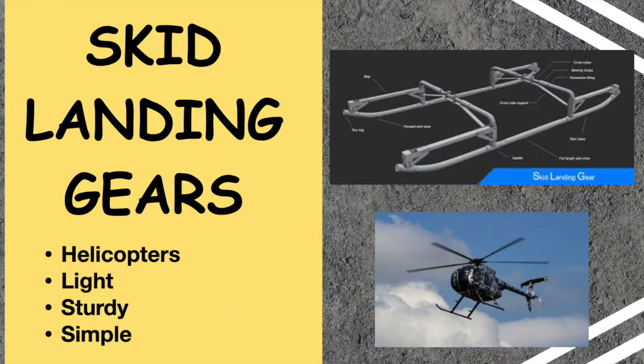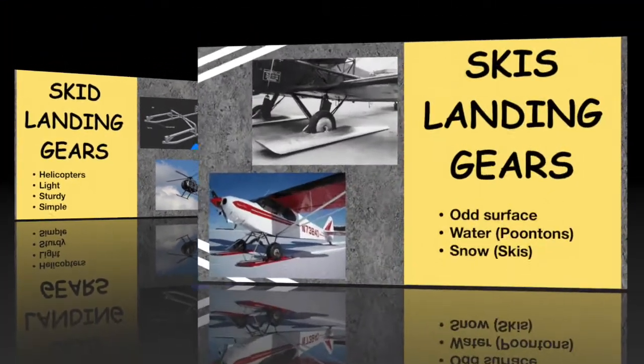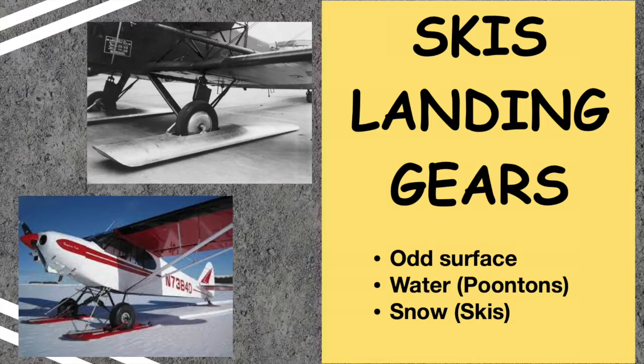A skid landing gear is normally used by helicopters. It provides a light, sturdy, and simple design. A ski landing gear is used when landing on odd surfaces such as snow or water. The skis made to function on water are called pontoons, while those used to function on ice and snowy surfaces are simply called skis.